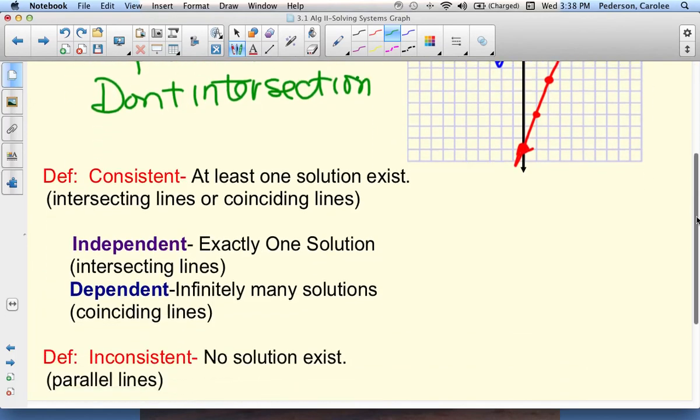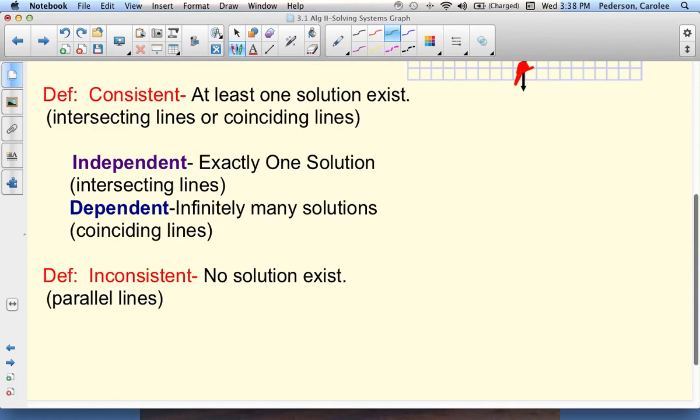To classify it, we classify this as inconsistent. There is no solution that exists because they are parallel lines.